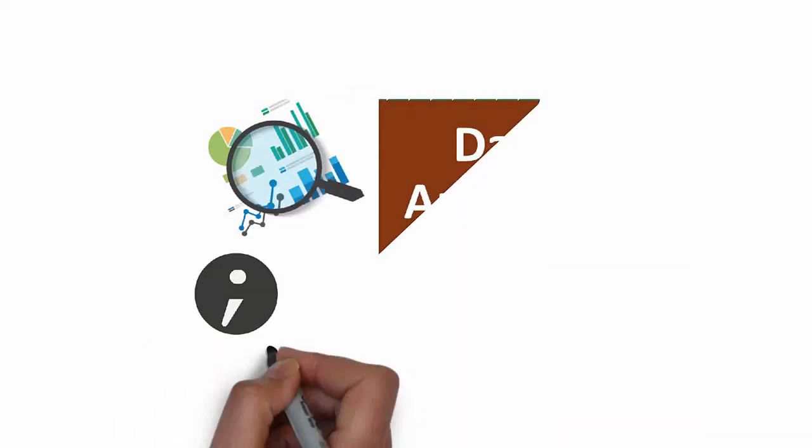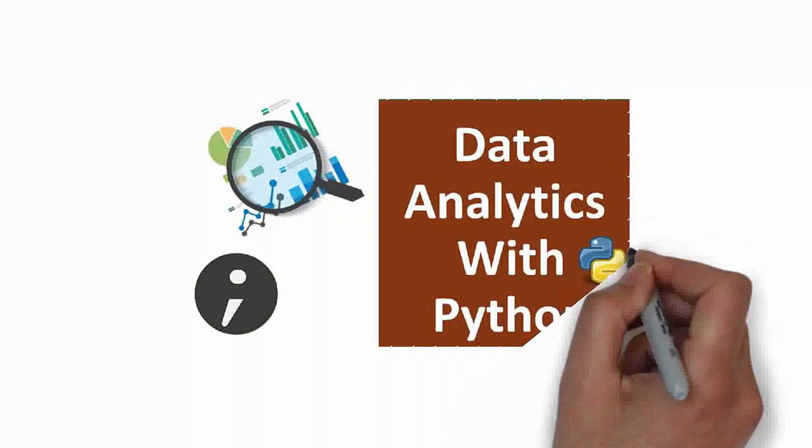Hello everyone, welcome to the semicolon. This video is a part of the series Data Analytics with Python and today we're going to learn about bias-variance trade-off.